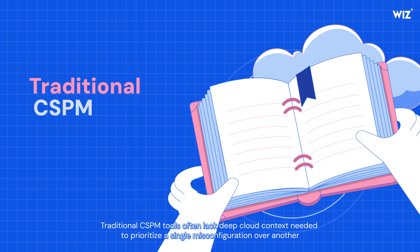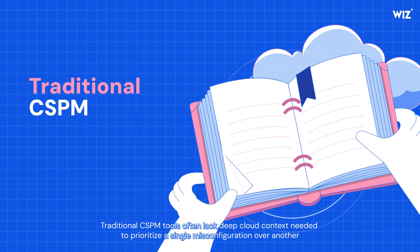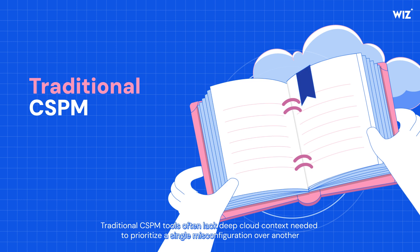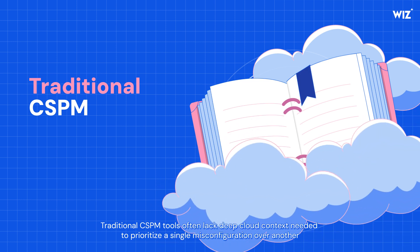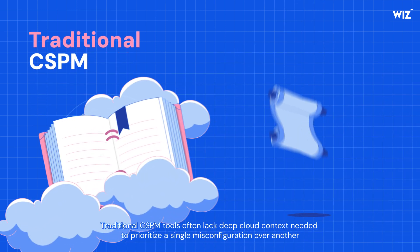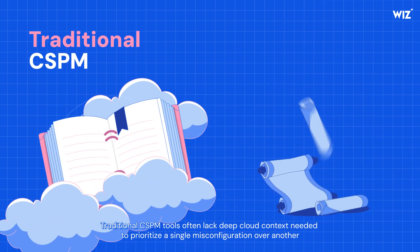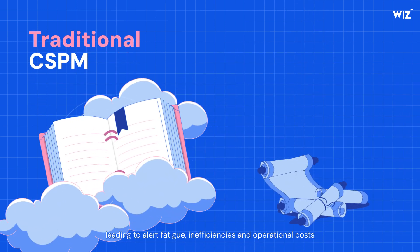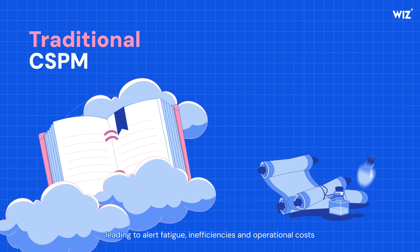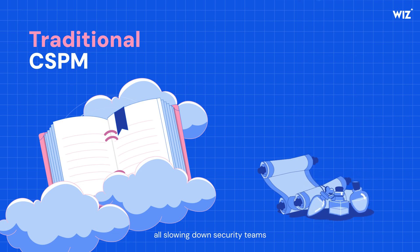Traditional CSPM tools often lack the deep cloud context needed to prioritize one misconfiguration over another, leading to alert fatigue, inefficiencies, and operational costs — all slowing down security teams.